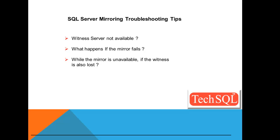If the mirror is unavailable and the principal is already running exposed, and at the same time the witness is also lost, the principal becomes isolated and cannot service clients. Even though the principal database is running, it is not available to clients, and if you attempt to connect to the database, you get an error message.